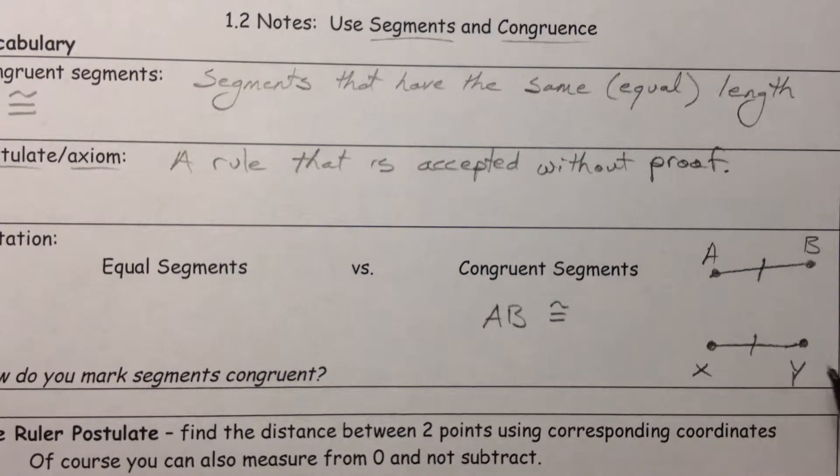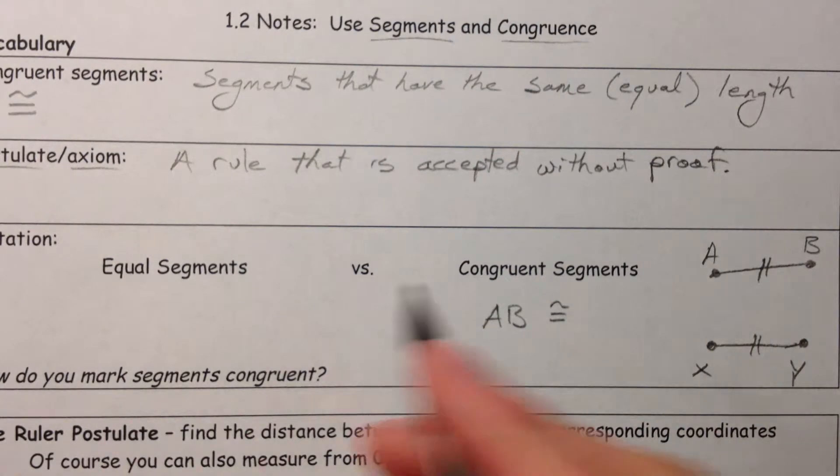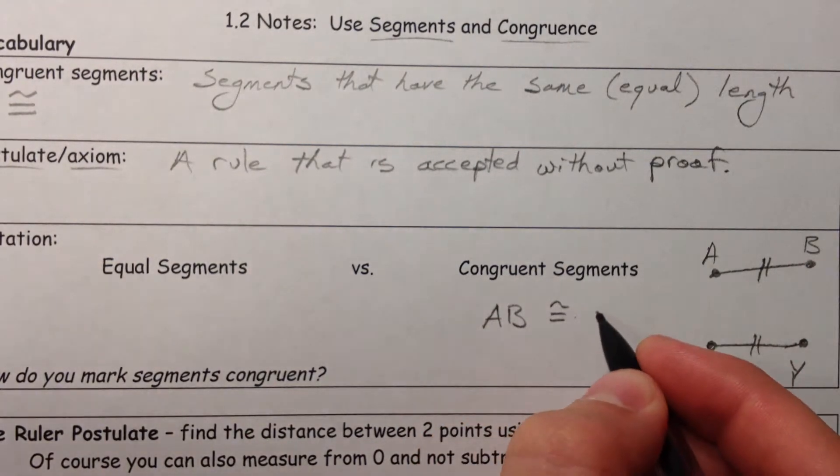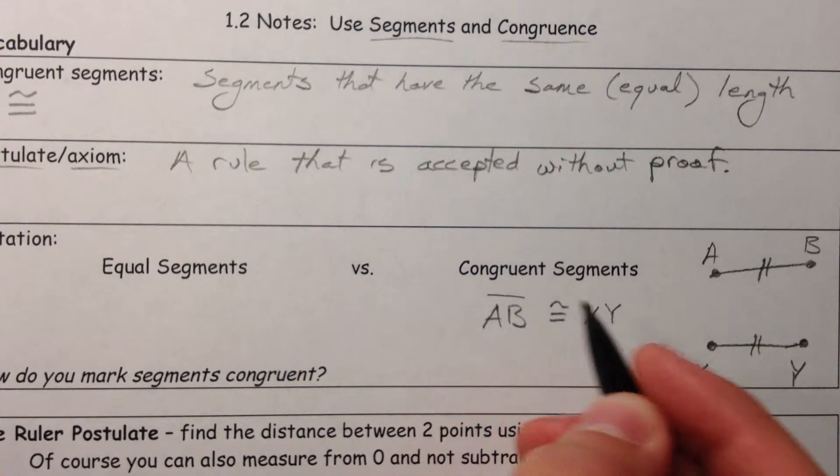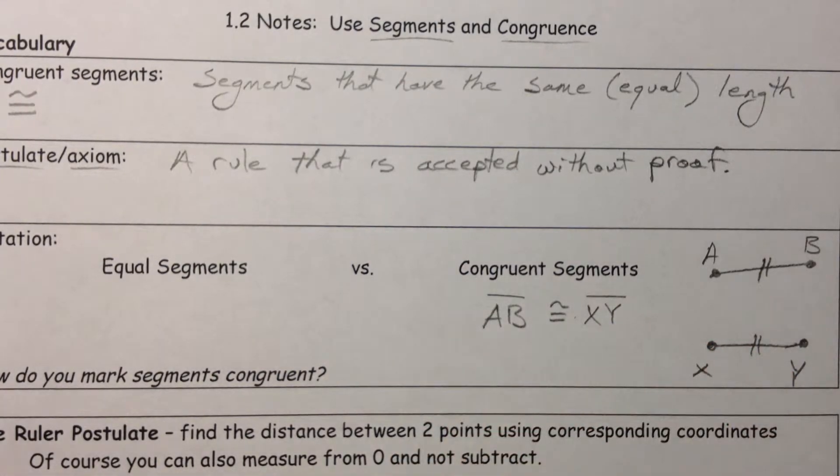And so if you have to do more than one, you can double it up, and you can say, oh, that one's congruent to that one. You can also use three, and so on. So, AB is congruent to XY. If we're going to talk about the segments and if we're going to use congruent, we're going to do segments.